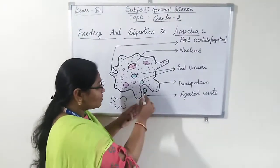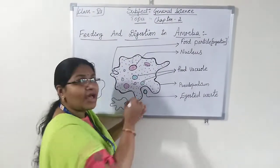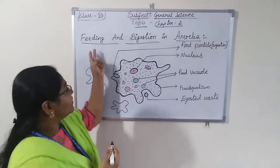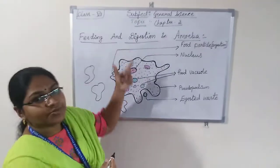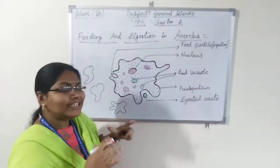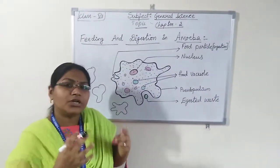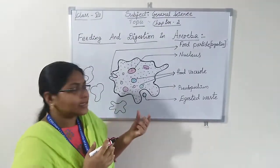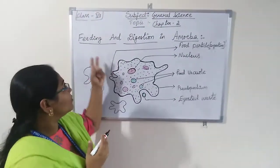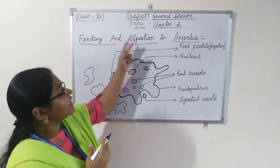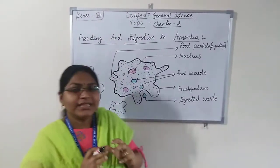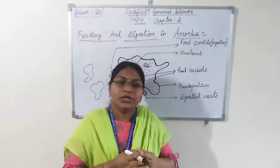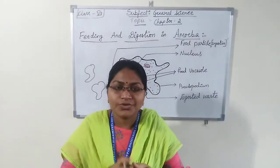After absorption, the undigested residue — the unwanted waste — comes outside through the vacuole. This is how the feeding and digestion process takes place in amoeba. You will learn in more detail in later, higher classes. This is a brief explanation about feeding and digestion in amoeba.